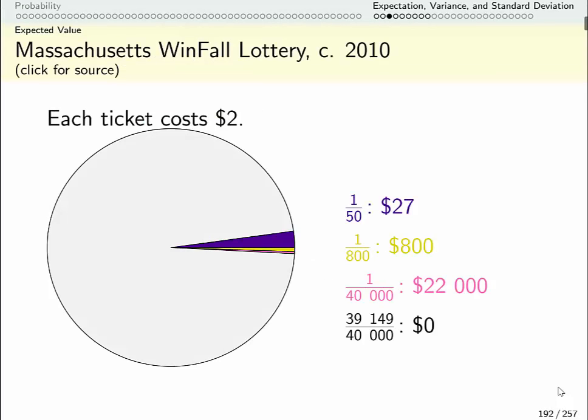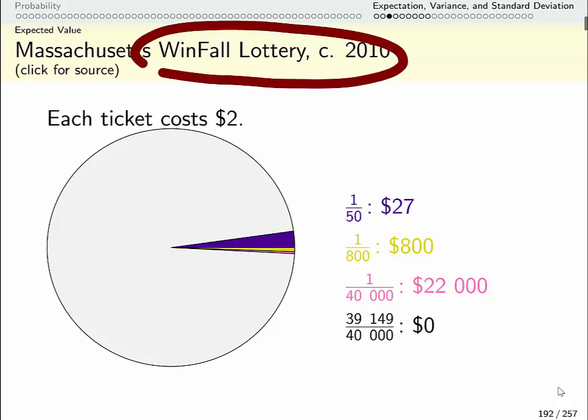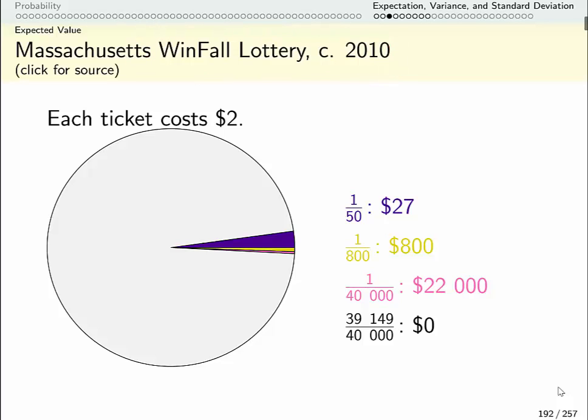Let's do another example. This time I want to calculate an expectation but I don't actually know how many events have occurred. Now this is based on a famous example. If you google it it's fun to read about, of a lottery that a lot of people made a lot of money on just because they knew how to calculate expectations.